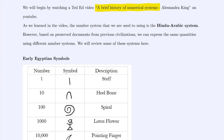Hello everyone. Today we are going to discuss historical number systems and we're going to begin with the Egyptian system. Before you continue further in this video, I would recommend that you look at the YouTube video, A Brief History of Numerical Systems by Alessandra King. It's a TED-Ed video and gives a great overview of some of the different historical number systems and why some are improvements on others, which we'll also try to discuss in this video.